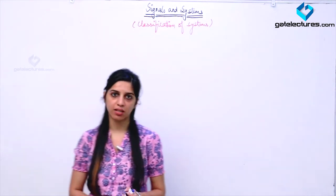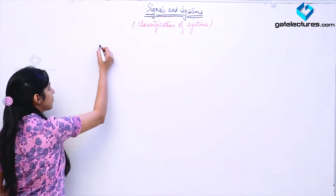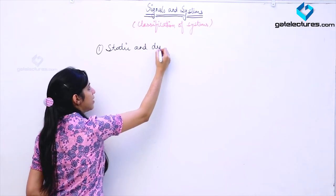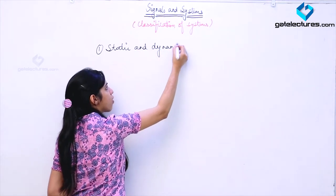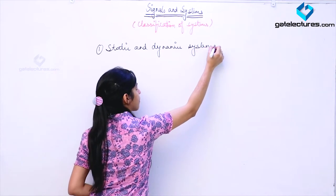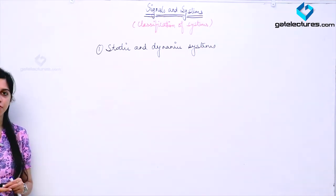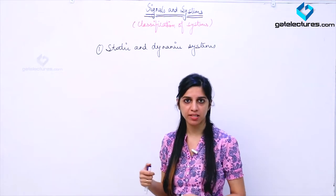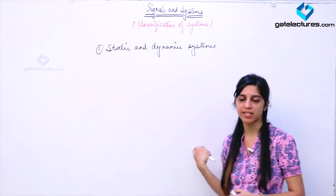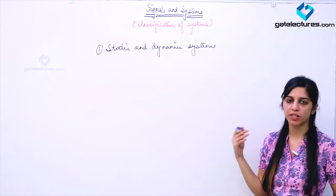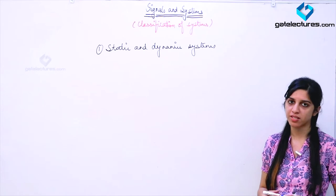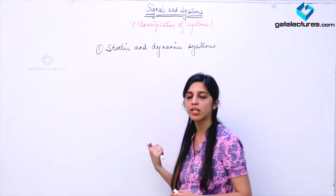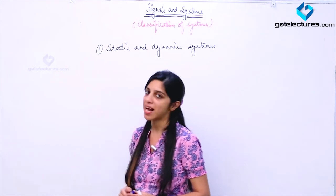The next classification we are going to see today is static and dynamic systems, or systems with memory or memoryless systems. How we are doing this classification is: if a system has an arrangement of memory, if a system can depend on past and present inputs, then it is going to be known as a dynamic system. If the system has an arrangement of memory and can store past inputs, then we are calling it a dynamic system. Whereas, if a system depends only on the present inputs, then we are calling it a static system.